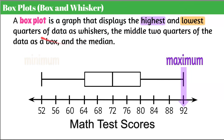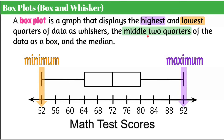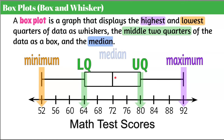The minimum value is the end of the left whisker. Then we have the lower quartile, which is the start of the box, and the upper quartile, which is the end of the box. The median is the line inside the box — it's not necessarily the middle of the box. It could be positioned anywhere inside it.